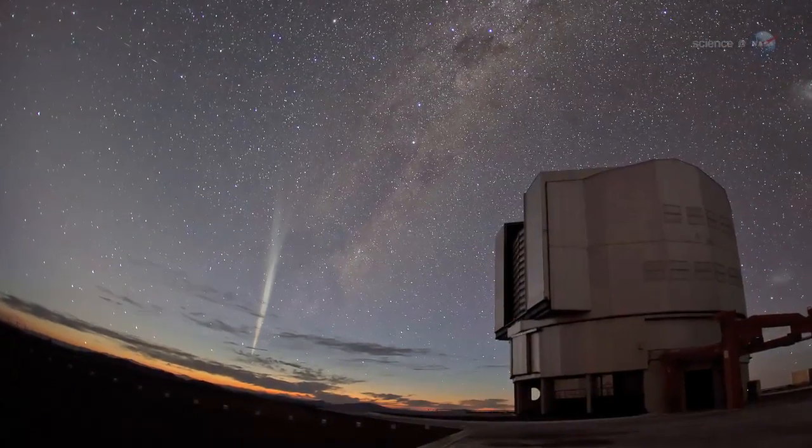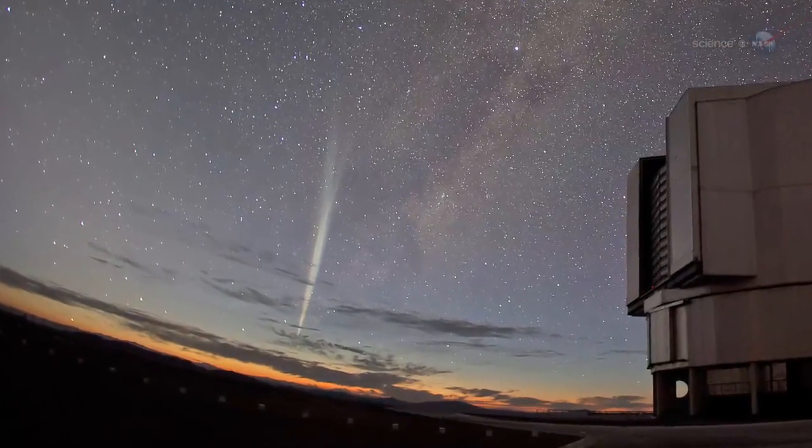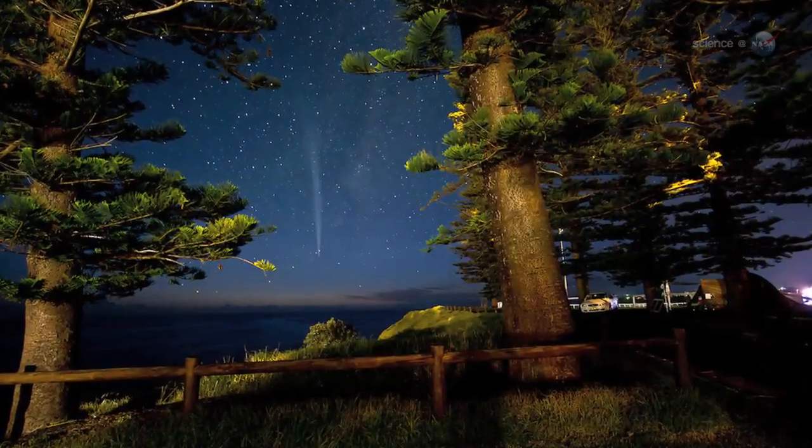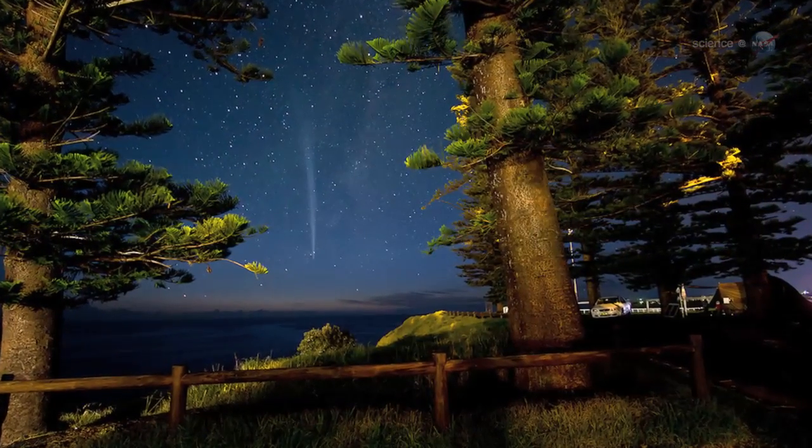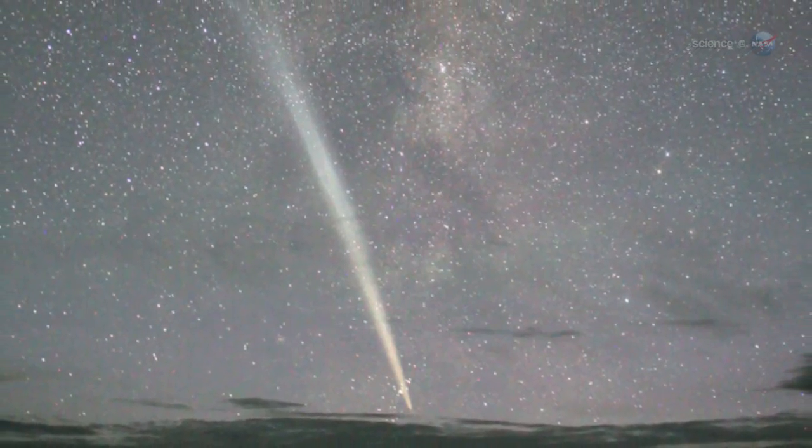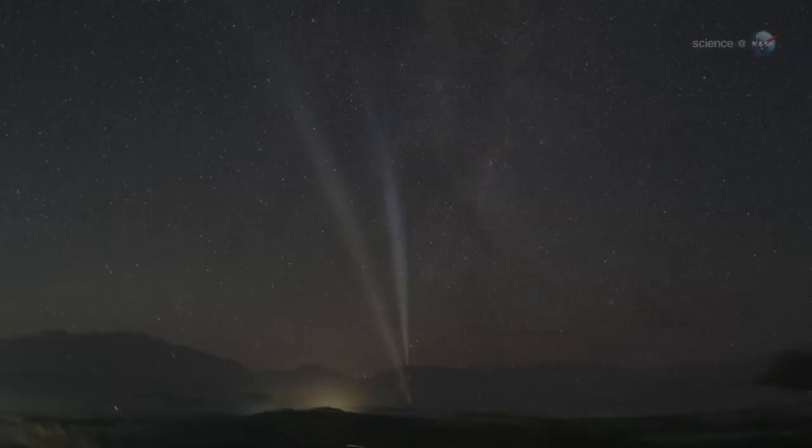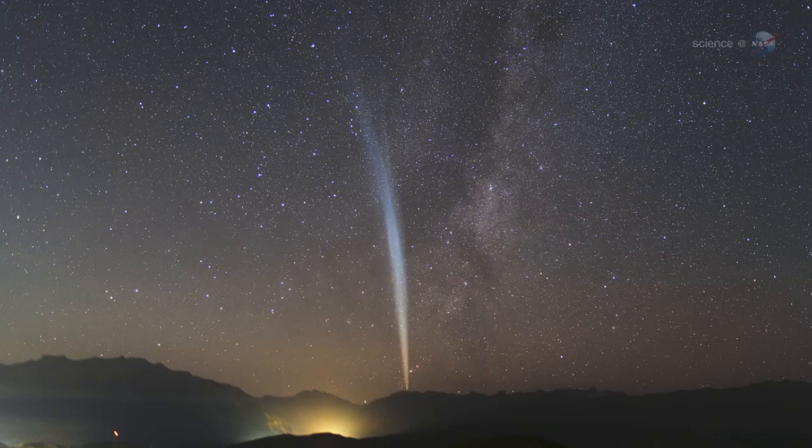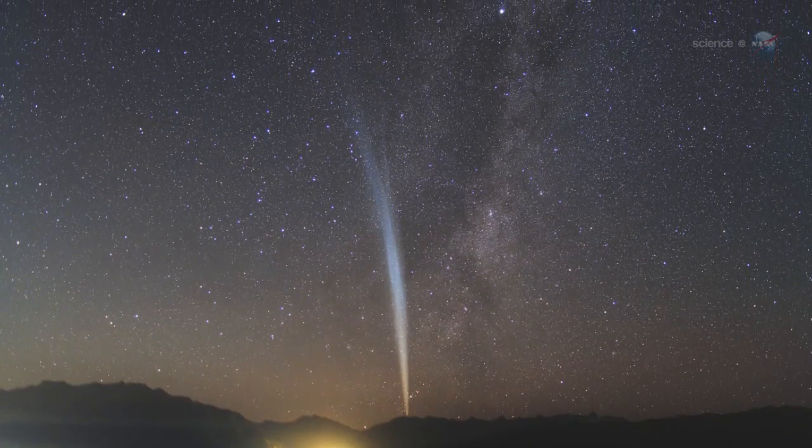Only a few days after it left the Sun, the comet showed up in the morning skies of the Southern Hemisphere. Observers in Australia, South America, and New Zealand likened it to a searchlight beaming up from the east before dawn. The tail lined up parallel to the Milky Way, and for a few days made it seem that we lived in a double-decker galaxy.